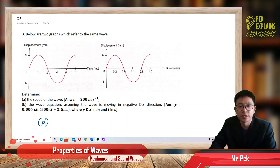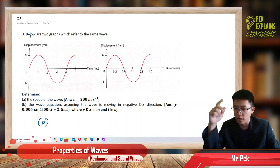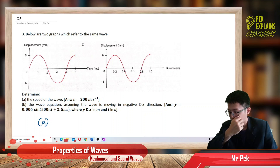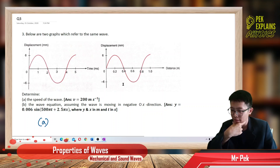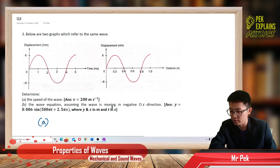Welcome to the third question in Properties of Wave. Below are two graphs which refer to the same wave. Determine the speed of the wave. I didn't see any speed here — how to find out the speed of the wave? And also the wave equation.